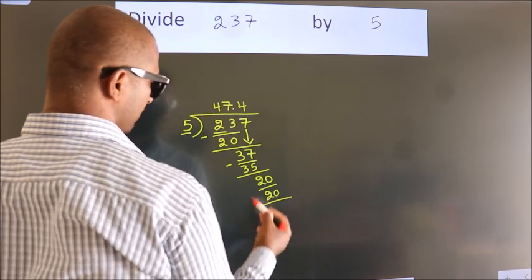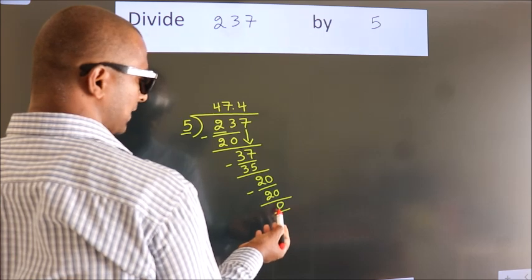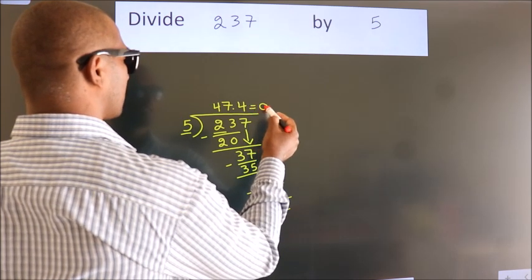Now, we subtract. We get 0. We got remainder 0, so this is our quotient.